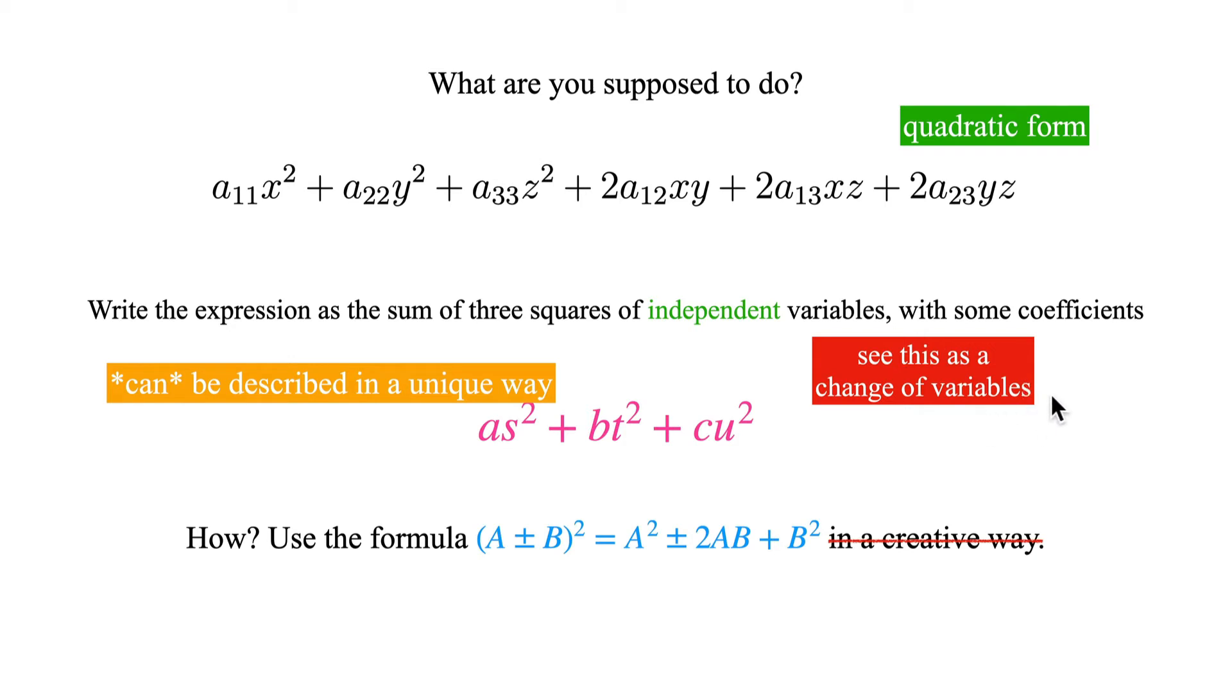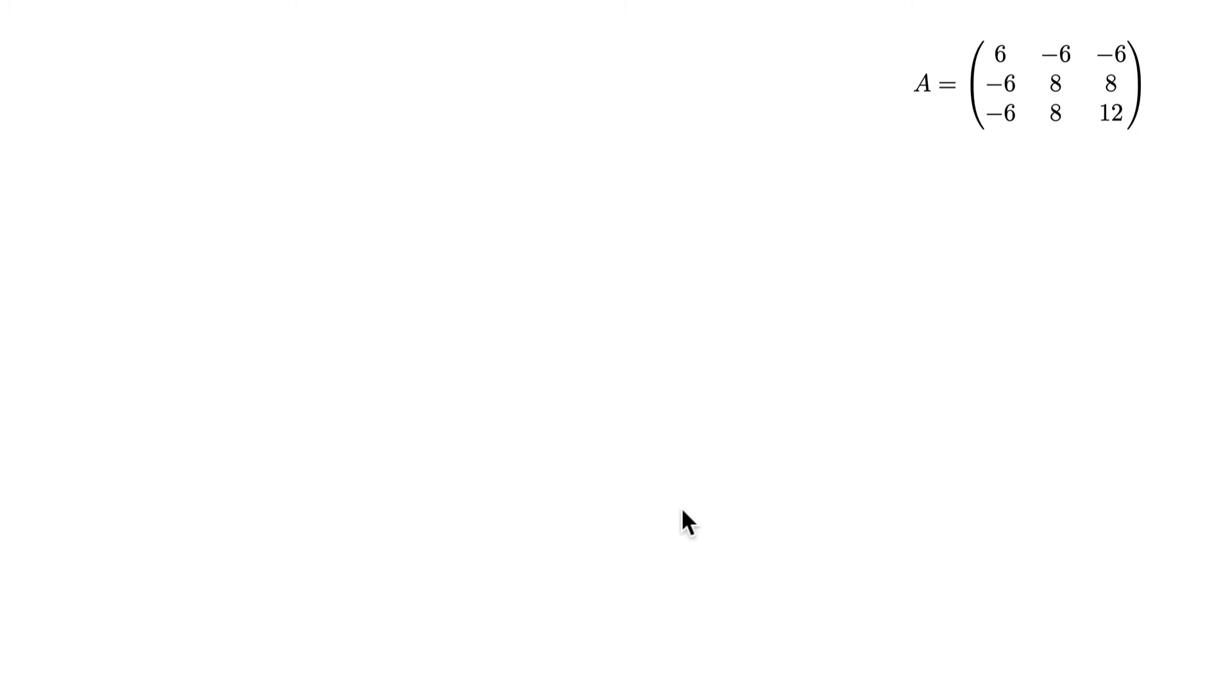If you don't know now what change of variables is, don't worry. At the moment you need it, you will know, and then you can come back to this video. I have deleted here that you have to do this in a creative way, because if it's a three by three matrix or a form in three variables, it is really better to keep the systematic way of working. Now I will show you how such a systematic way looks.